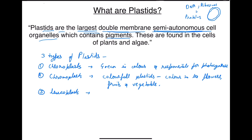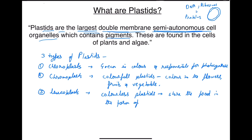Number three is leucoplast. These are colorless plastids. Their main function is to store food in the form of starch and fat.